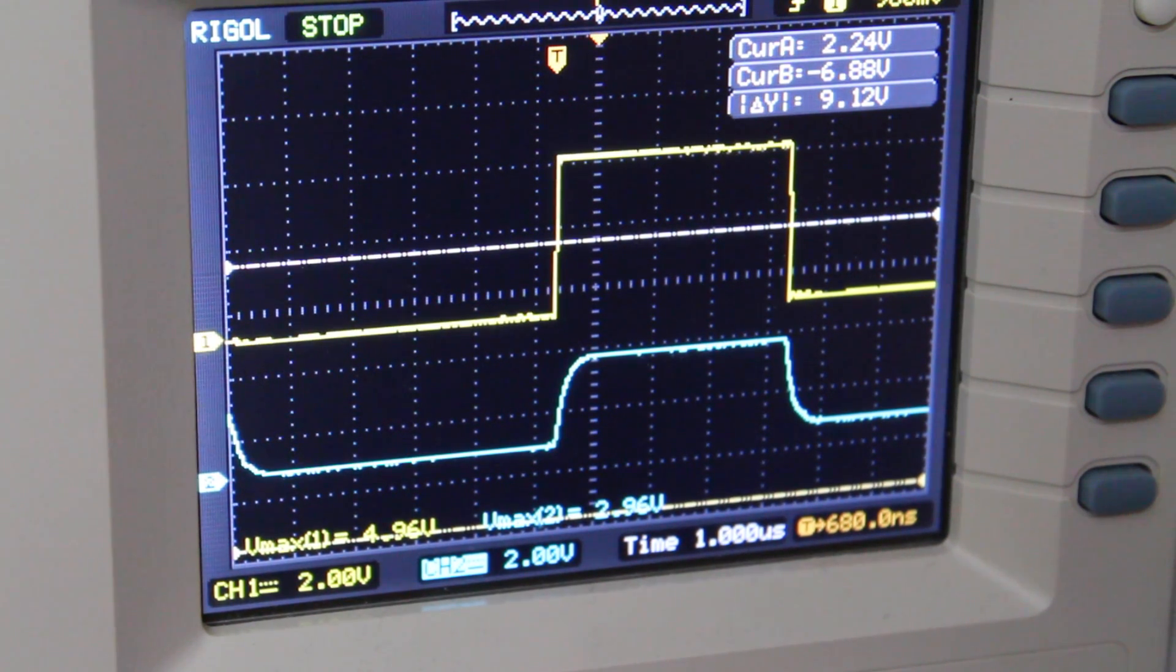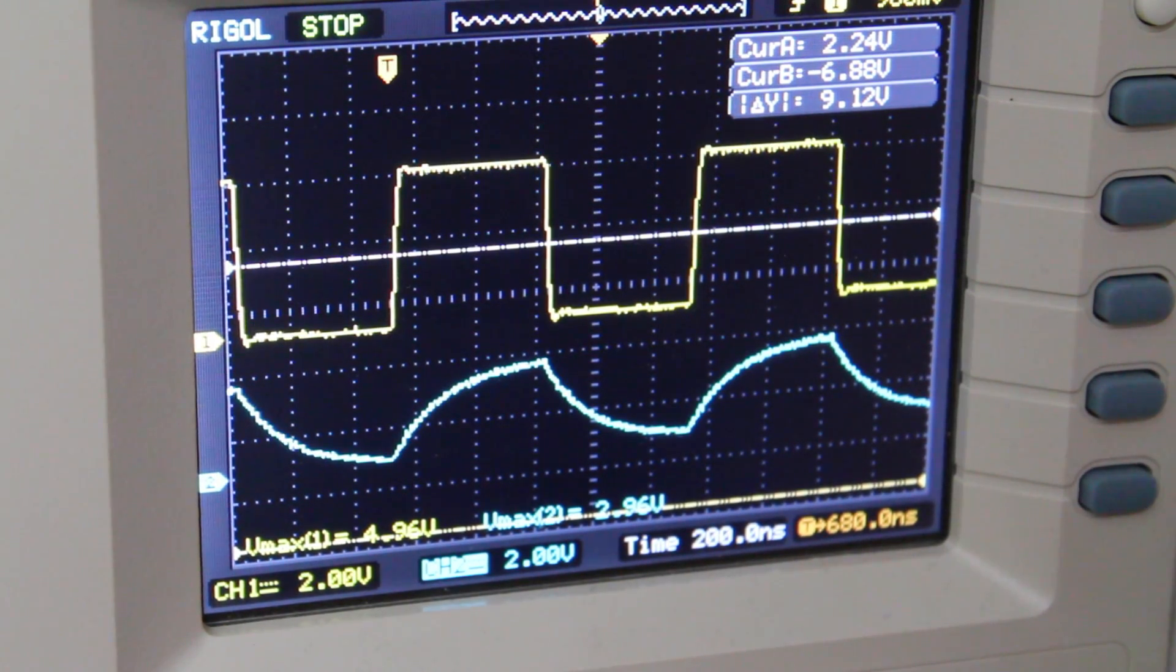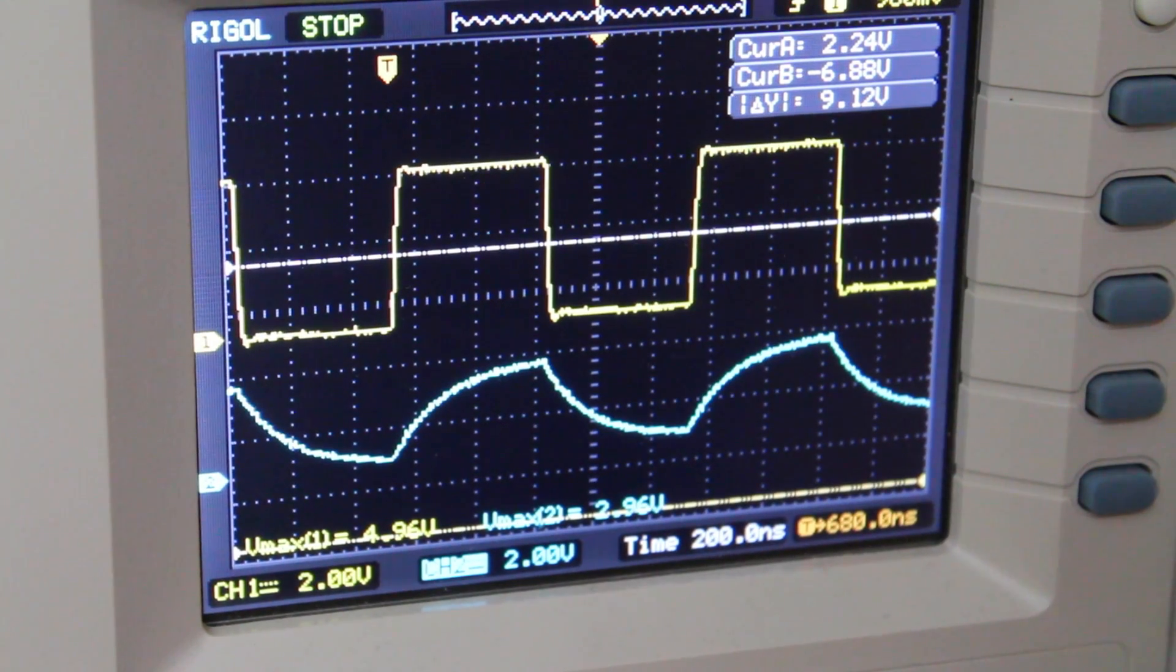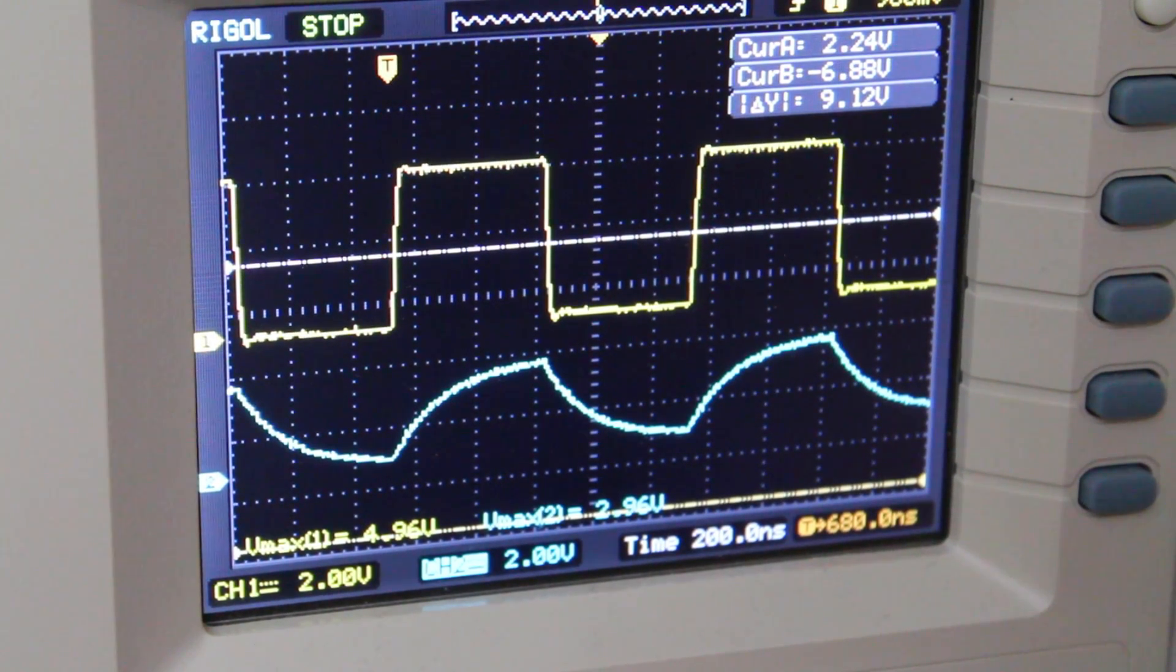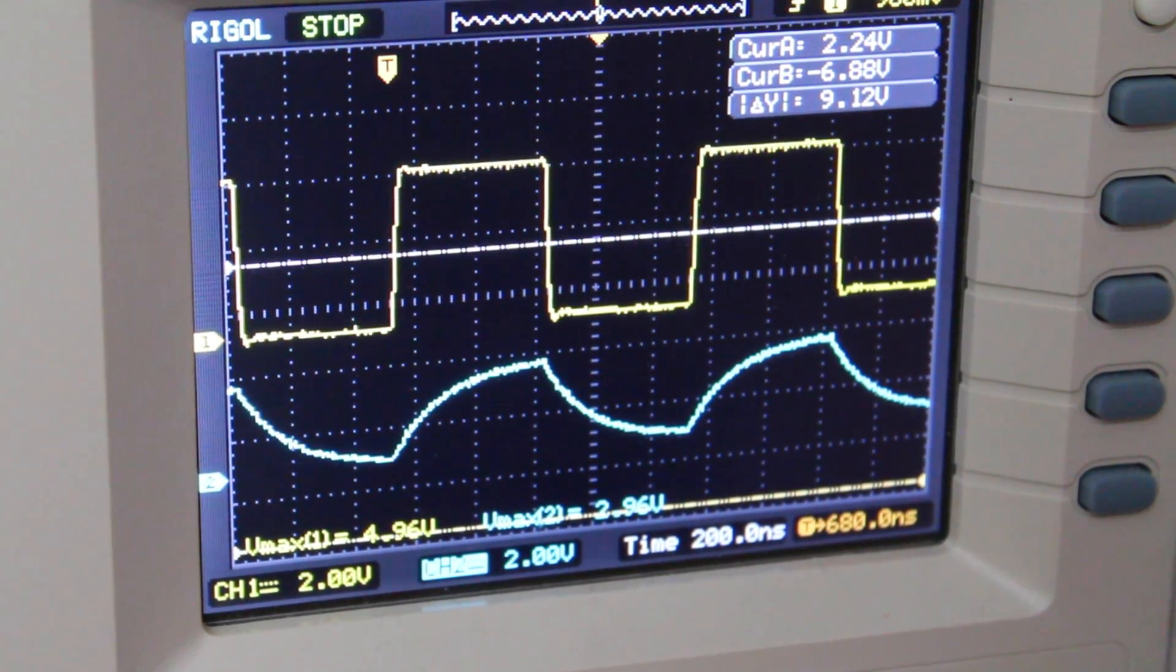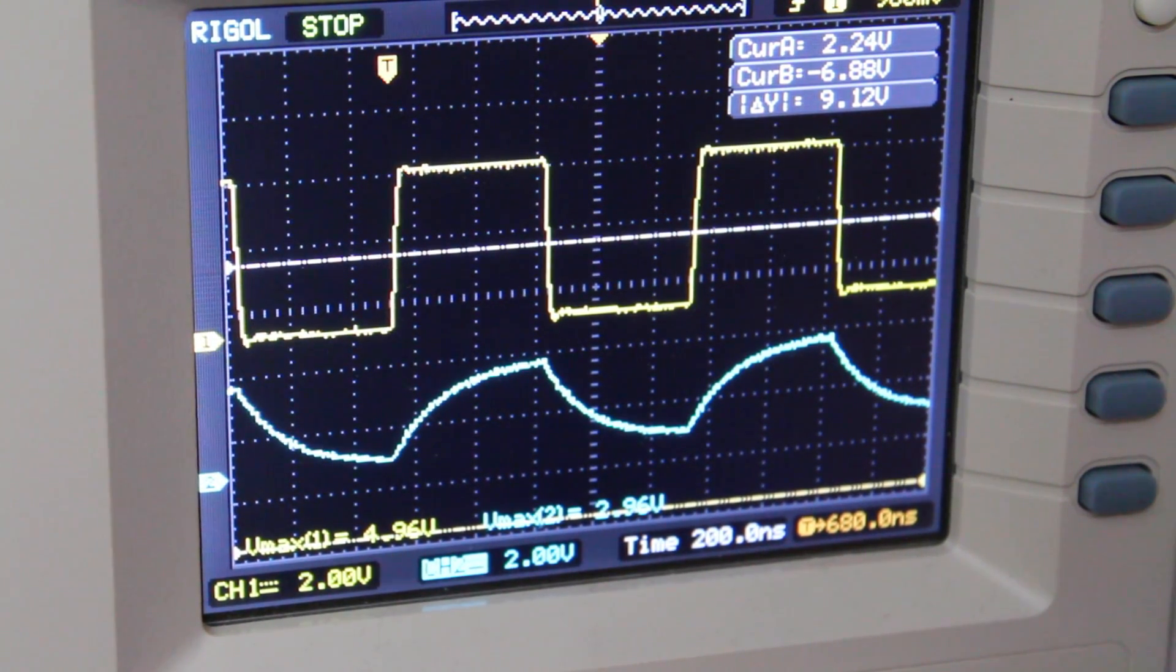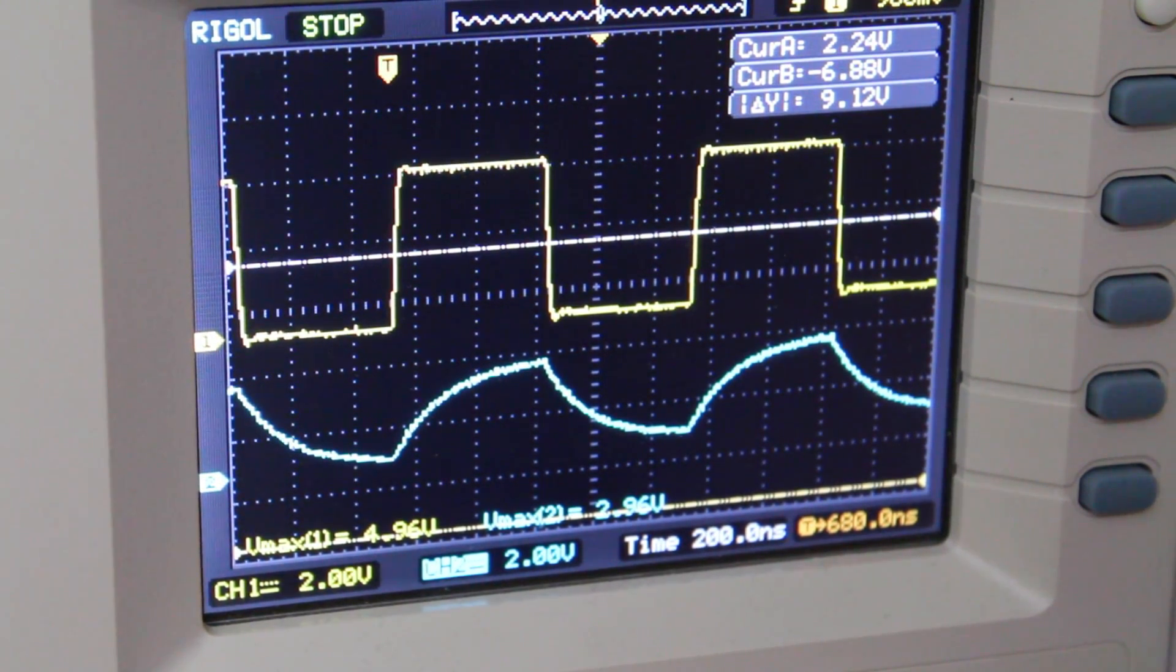Let's see what happens when we increase that speed to one megahertz. You can clearly see that the rise time and fall time play a huge role in the output signal now when you increase that data speed.